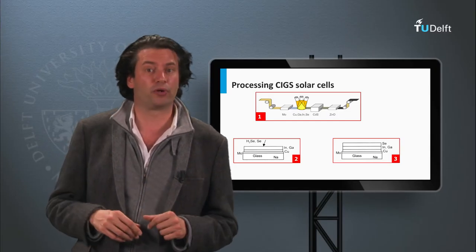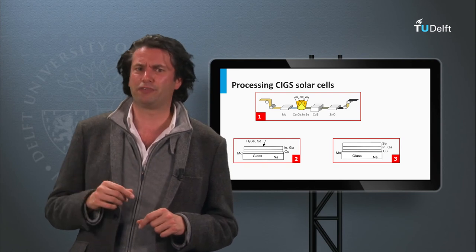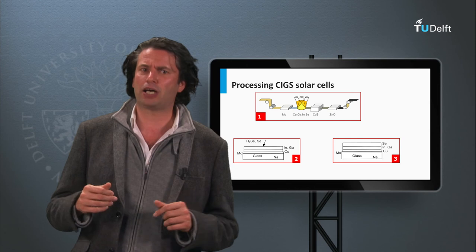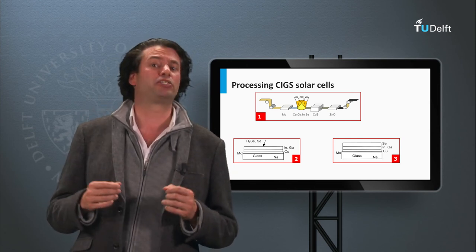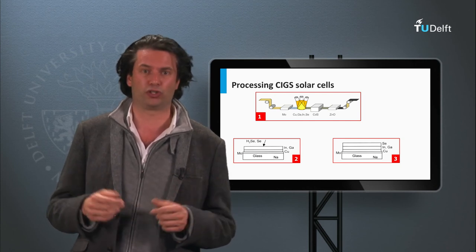An alternative approach is based on a kind of wafer bonding technique. Two different films are deposited on a substrate and a superstrate. The films are pressed together under high pressure. When heated the film is released from the superstrate and a CIGS film remains on a substrate. This processing technique is used by the company HelioVolt.